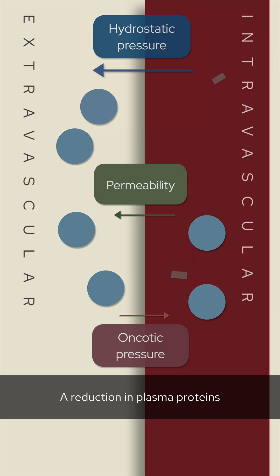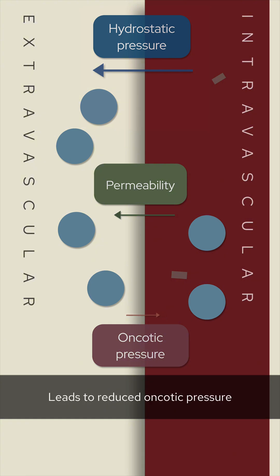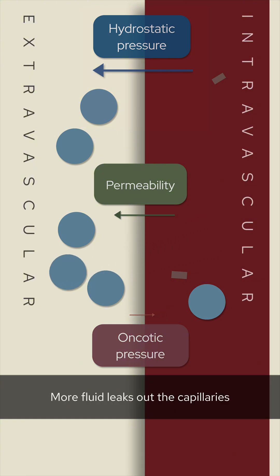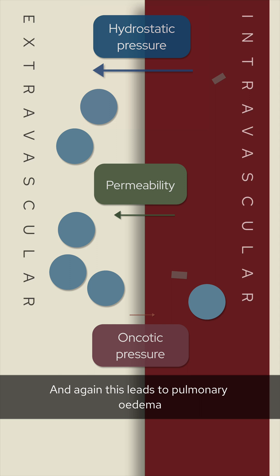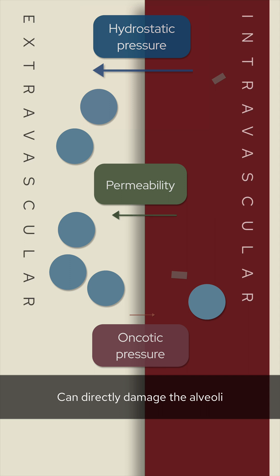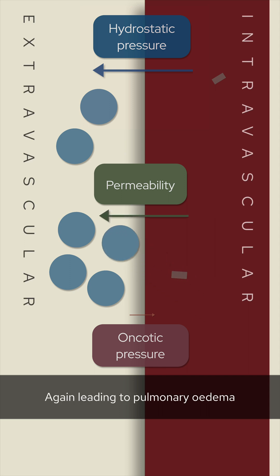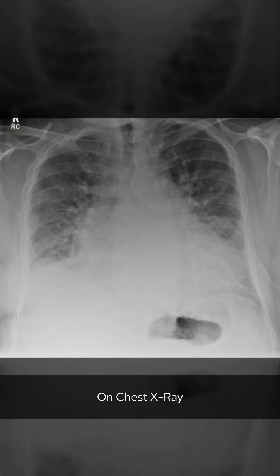A reduction in plasma proteins — which can happen in any situation with reduced serum albumin — leads to reduced oncotic pressure, so more fluid leaks out of the capillaries, again causing pulmonary edema. Some causes of non-cardiogenic pulmonary edema can directly damage the alveoli and increase vessel permeability, again leading to pulmonary edema.